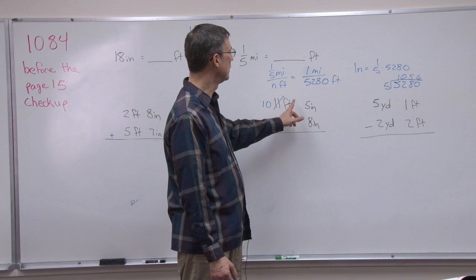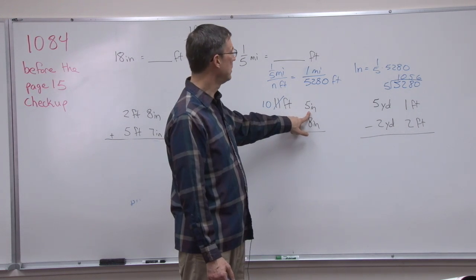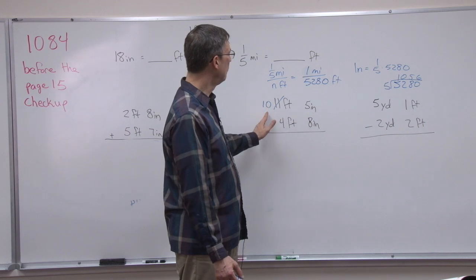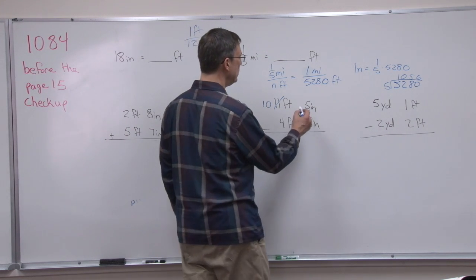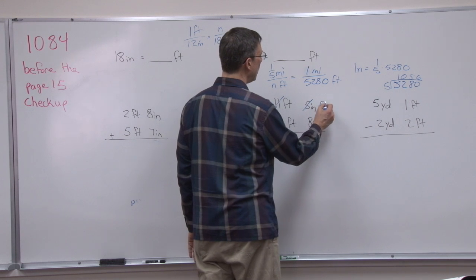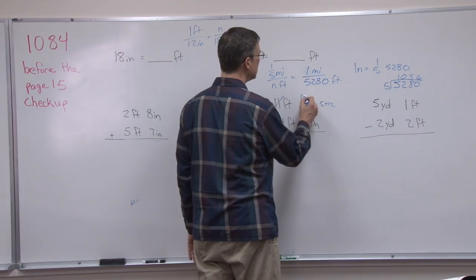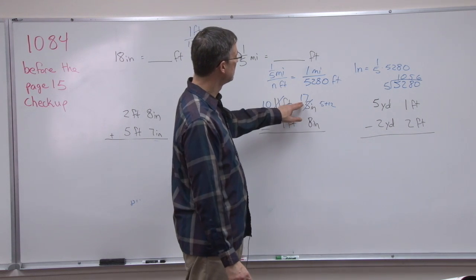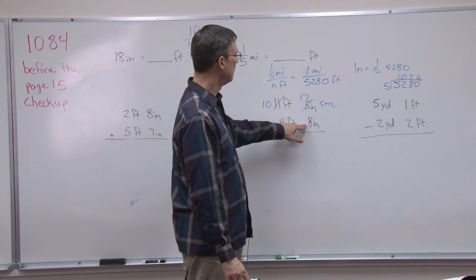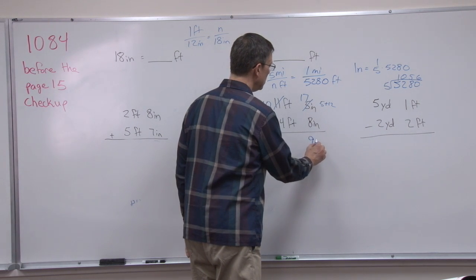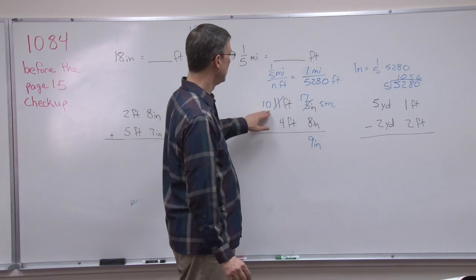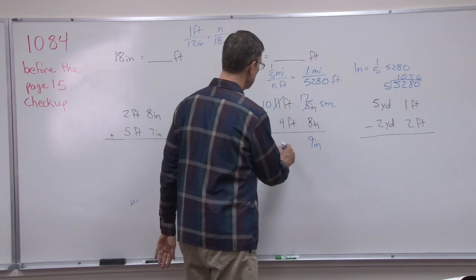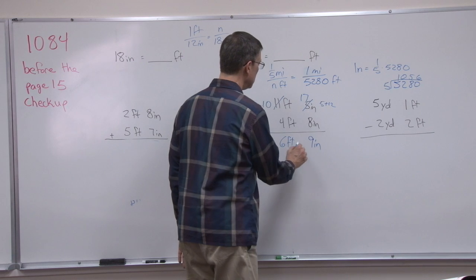So I don't add 1 to the 5 and make it 6. I don't even add 10. A lot of students do that. They think, oh, I'm borrowing, so I need to add 10, and they try to make that into a 15. But that's not what we're borrowing. We're borrowing 1 foot, which is 12 inches. So 5 plus 12 makes this 17 inches. And now I can subtract 17 inches minus 8 inches, and the answer is 9 inches. And then over here, instead of 11, I use the 10. 10 minus 4 is 6 feet.